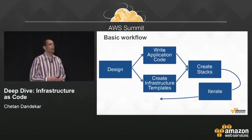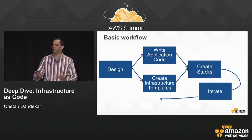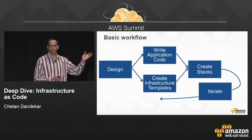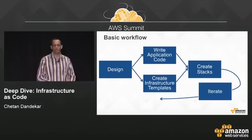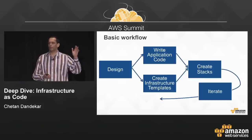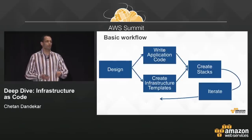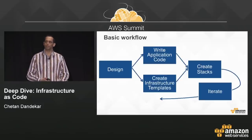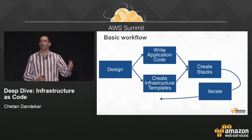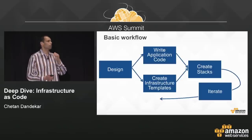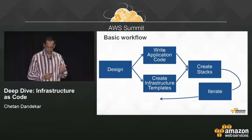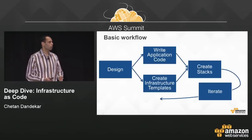The basic CloudFormation workflow starts with a business problem. You design a solution — you'll need application code to implement the business logic and infrastructure to host that application. You design and implement application code and design infrastructure templates. From the templates, you create stacks, which are collections of resources. CloudFormation creates those stacks and also has hooks to deploy application packages on top of those infrastructure stacks. Once you have a stack, it's infrastructure and application running and serving your customers — and you continue to iterate on it.